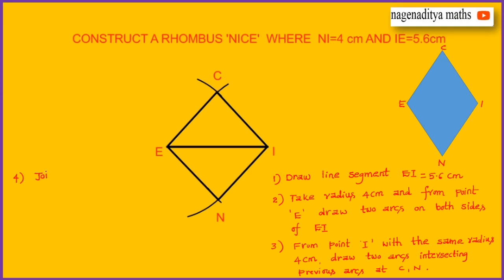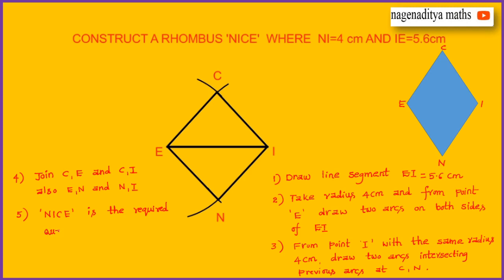Step 4: Join C and E, C and I, also E and N, and N and I. Step 5: NICE is the required rhombus.